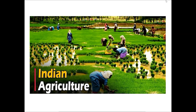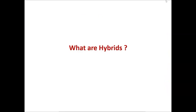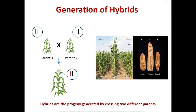Agriculture is the backbone of Indian economy and we are practicing it since ages. More than 60-70% of the Indian population directly or indirectly depend on agriculture for their livelihood. In agriculture, everyone must have heard the use of hybrids. What are hybrids? How are these hybrids generated? Hybrids are the progeny generated by crossing two independent pure lines. These hybrids show increased characters like growth rate, size, fertility and yield over the parents.